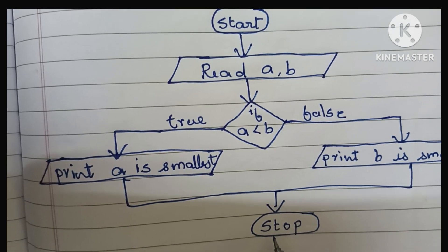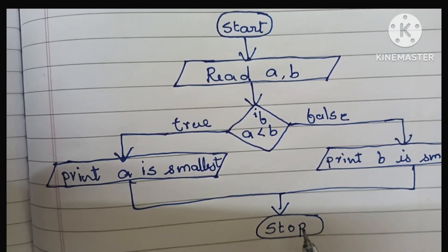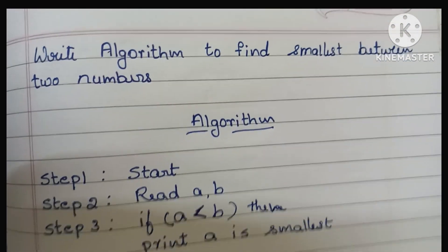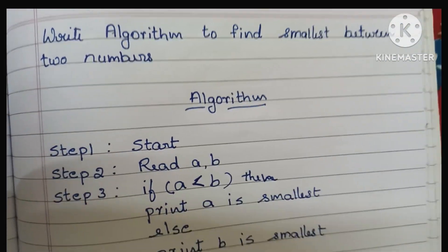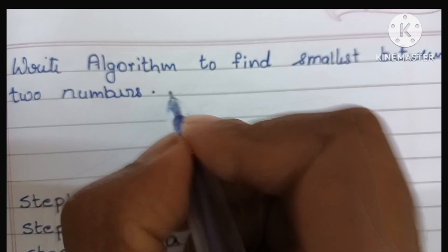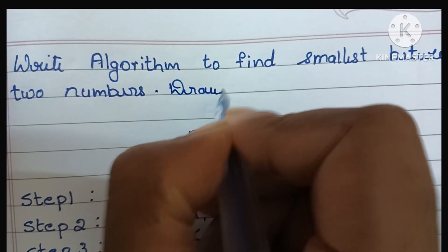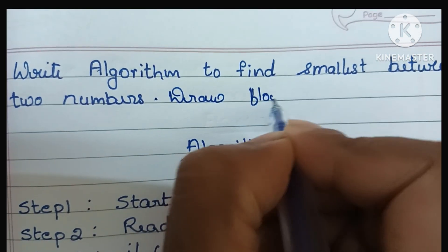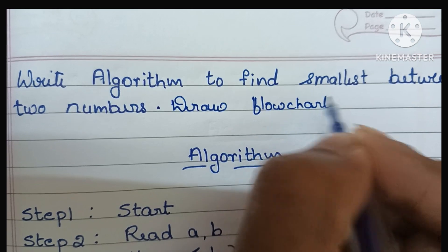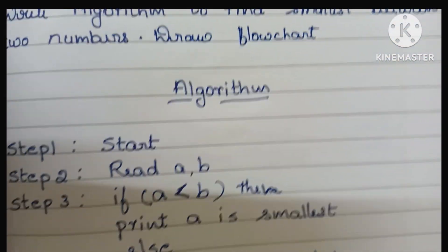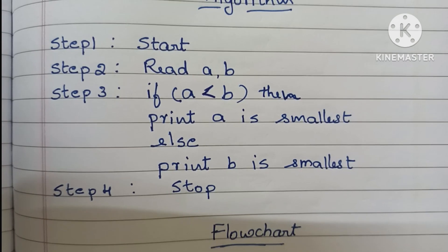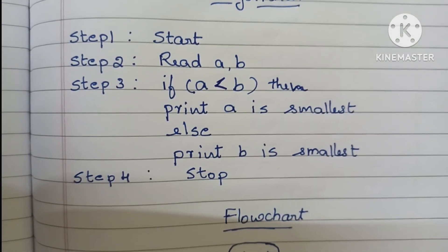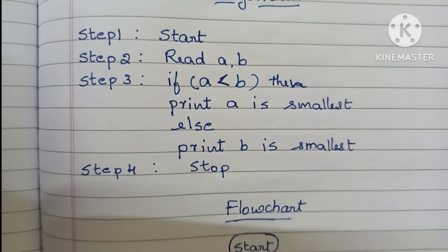Finally, we stop the flowchart using the stop statement written within an oval shape. So guys, this is the algorithm and flowchart to find the smallest between two numbers. Thank you for watching — if you like my video, please like and subscribe to my channel.